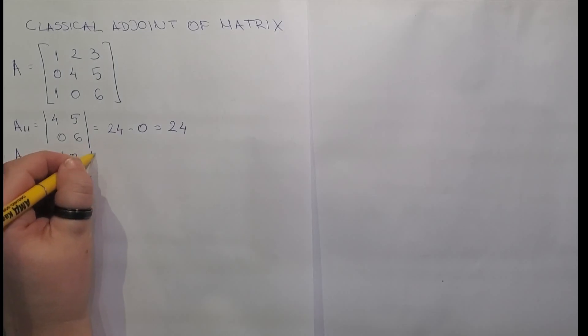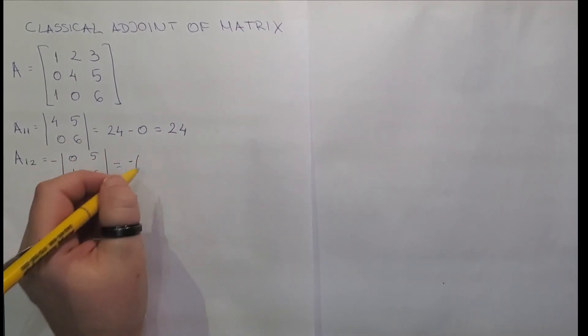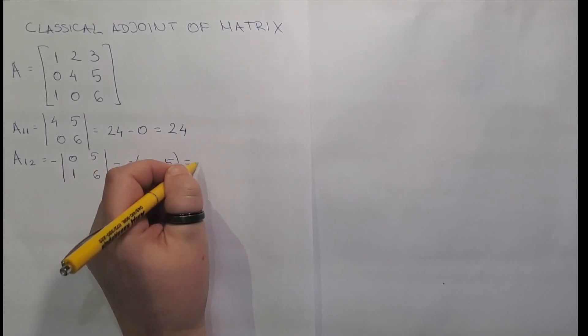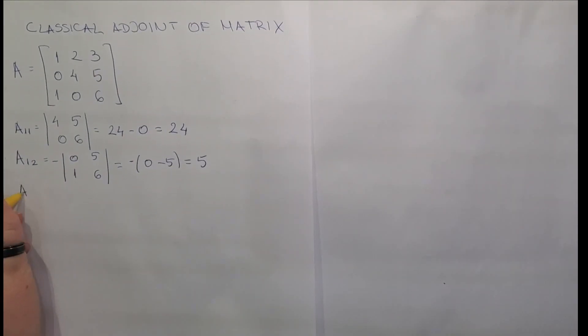So we have minus 0, 5, 1, 6. So we have minus 0 by 6 is 0, minus 5. This equals to 5. Next element is a13.